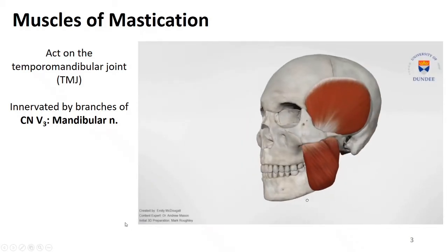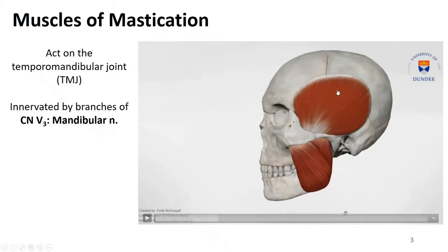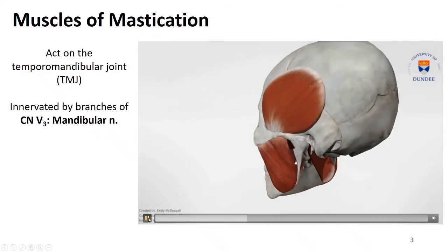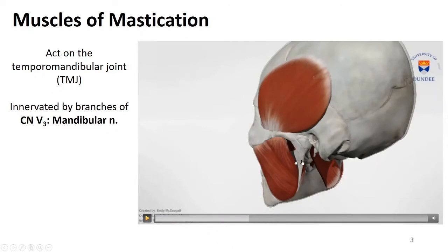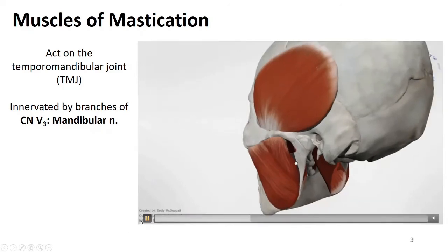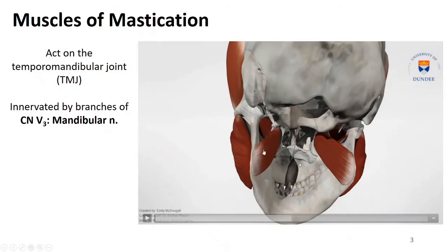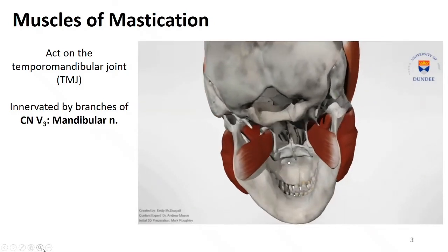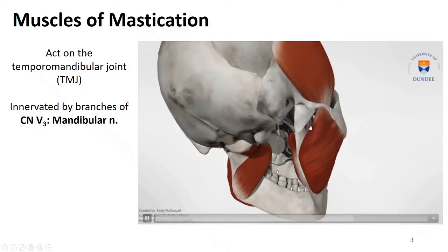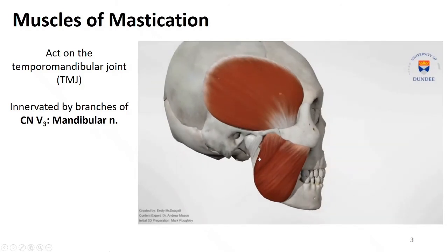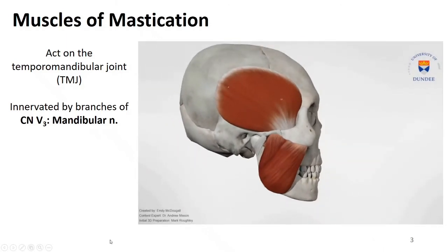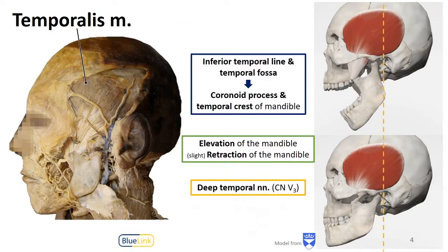From a lateral view we can see nicely the more superficial group, which is the temporalis seen up here and the masseter muscle. When we start to turn more posterior we see a tiny peak of a muscle there and then also one kind of on either side. Looking from posterior, we can identify the medial pterygoid sitting more medially and the lateral pterygoid.